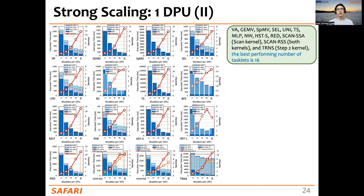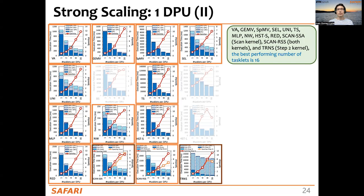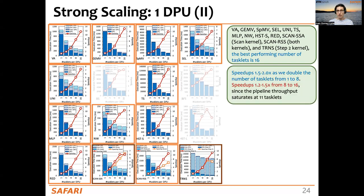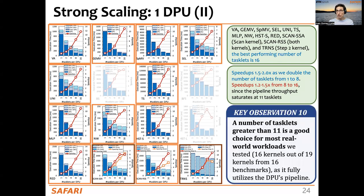Looking at more detailed results across benchmarks, the best-performing number of tasklets is 16 for most. Speedup scales linearly from 1 to 8 tasklets, but the scaling from 8 to 16 is not linear because pipeline throughput saturates at 11 tasklets. The key observation is that a number of tasklets greater than 11 is a good choice for real-world workloads, because this keeps the pipeline fully utilized.